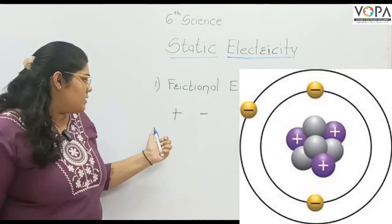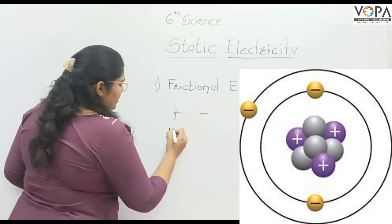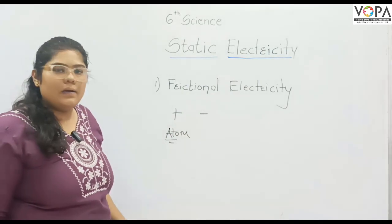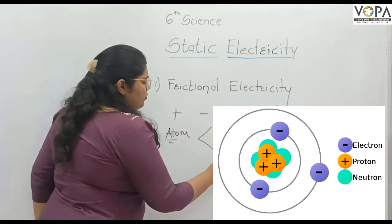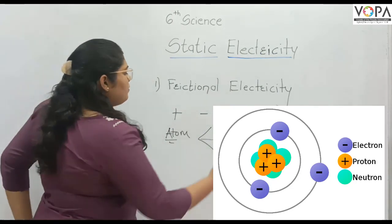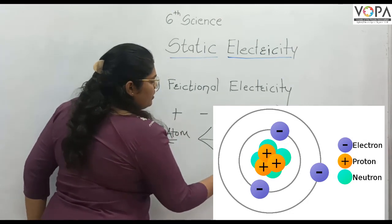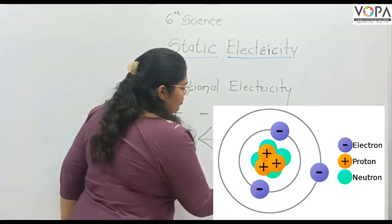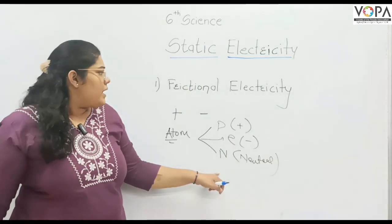We will see that particles are made by the atom. The atom is made by the proton, neutron, and electron. The proton means positively charged, the electron means negatively charged, and the neutrons don't have any charge, so they are neutral.